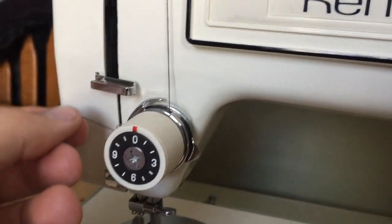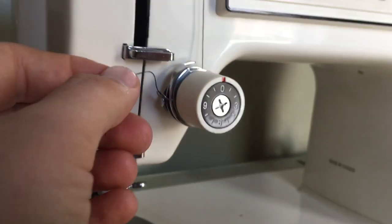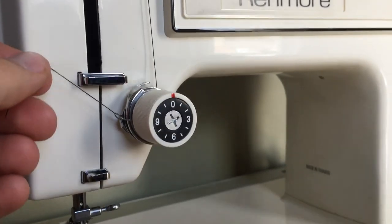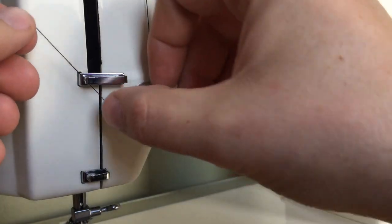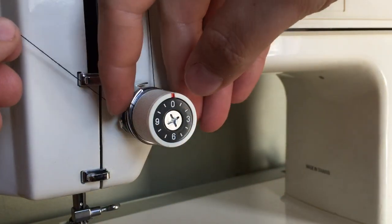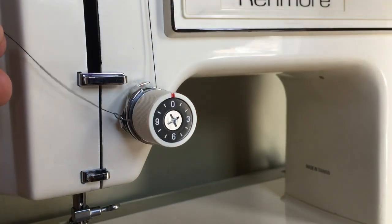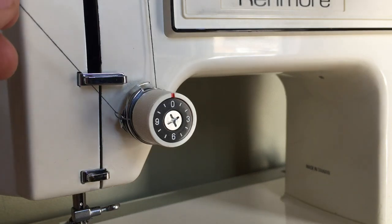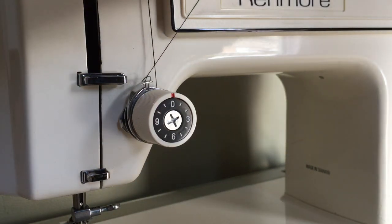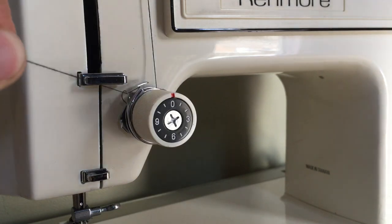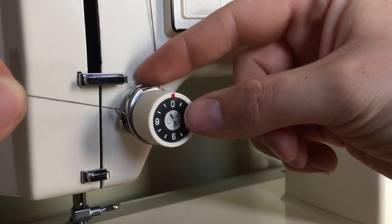And then we're going to go over to the other side here and there's this little tiny piece here, this little spring. So you're going to hold your spool and then pull up and towards you, and it goes over this little finger piece.